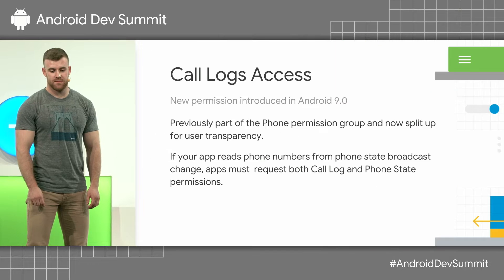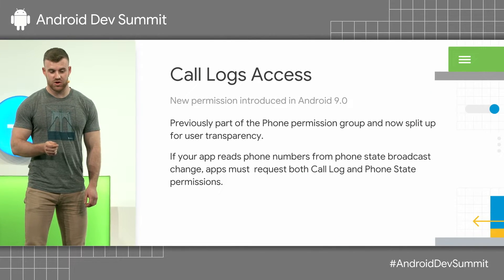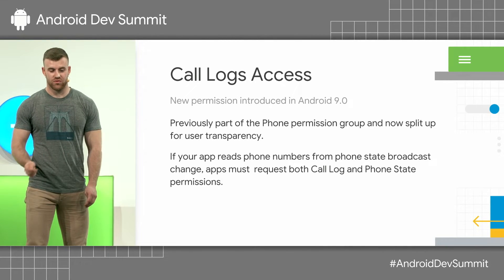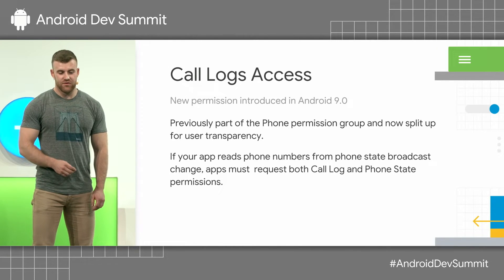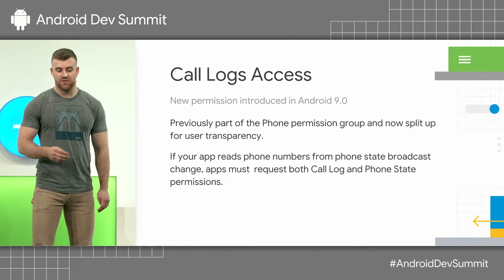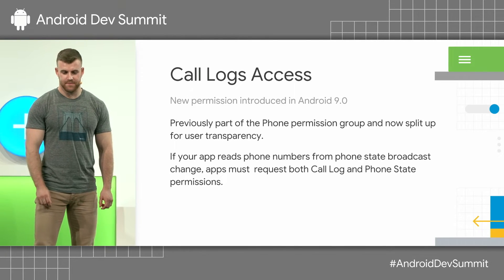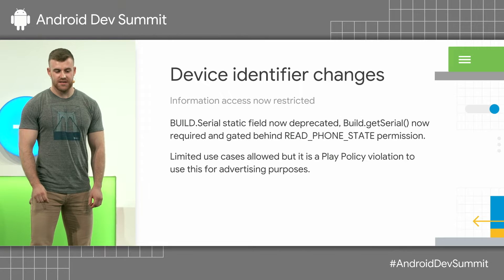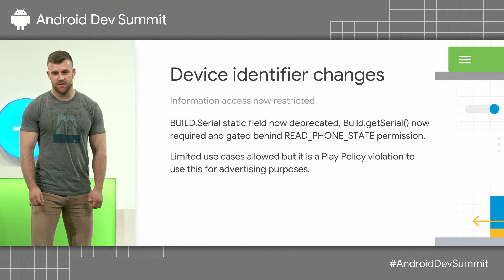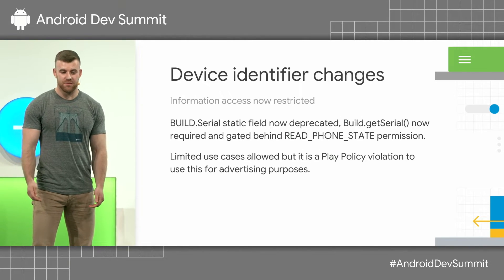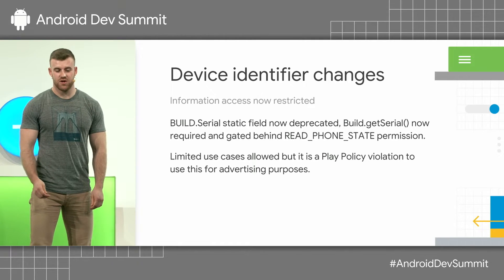In the latest Android releases, we've worked hard to offer a more privacy-sensitive OS. In Android 9, we split the call log permissions from the phone permission group into their own permission group — Call Log — to give users more transparency into what apps are doing. If your app is reading phone numbers from the phone state broadcast, we're now asking you to request both the Call Log and Phone State permissions. In Android 8, we deprecated the Build.SERIAL static field, replacing it with a Build.getSerial() function that requires READ_PHONE_STATE permission. Please be sure you're using it for valid purposes, as it's a policy violation to use it for advertising purposes.